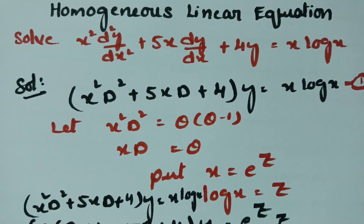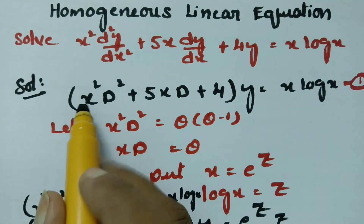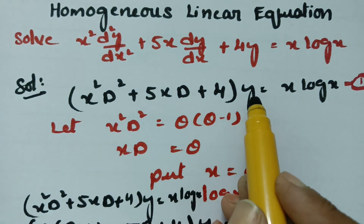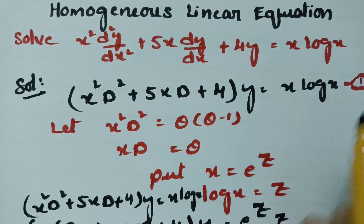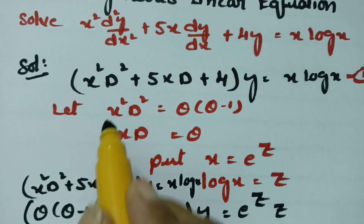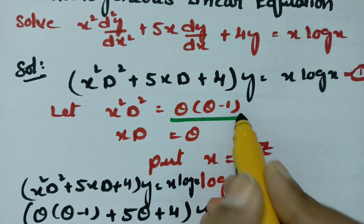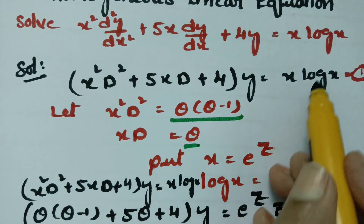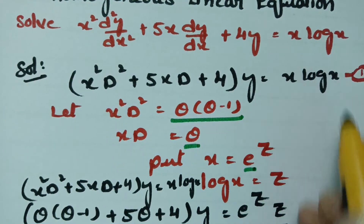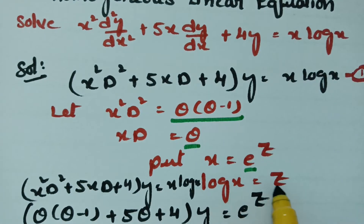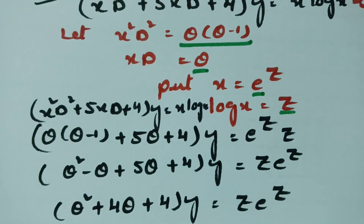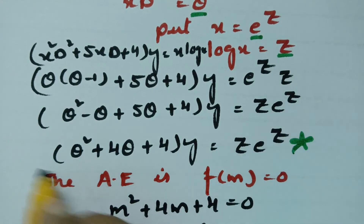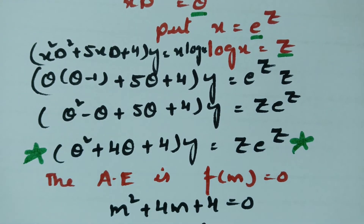This is a homogeneous linear equation. The key substitution steps are: x squared D squared becomes theta(theta minus 1), xD becomes theta, x becomes e to the power z, and log x becomes z. After substituting, we get the simplified equation to solve.